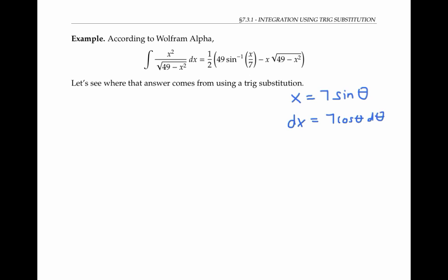Now I'll substitute in for x and dx in my integral to get the integral of seven sine theta squared over the square root of 49 minus seven sine theta squared times seven cosine theta d theta.